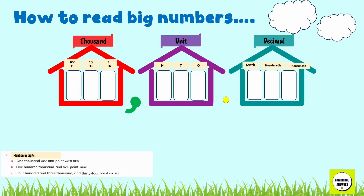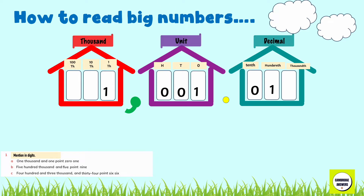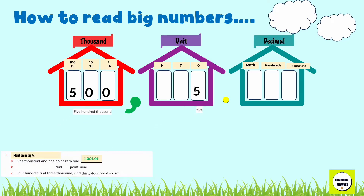Exercise 1.1, Question 1 — Write these numbers in digits. One thousand and one point zero one: we add the zeros to get 1,001.01. Five hundred thousand and five point nine: we add the zeros to get 500,005.9.